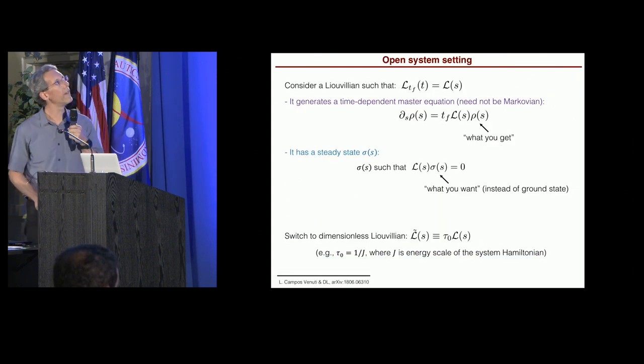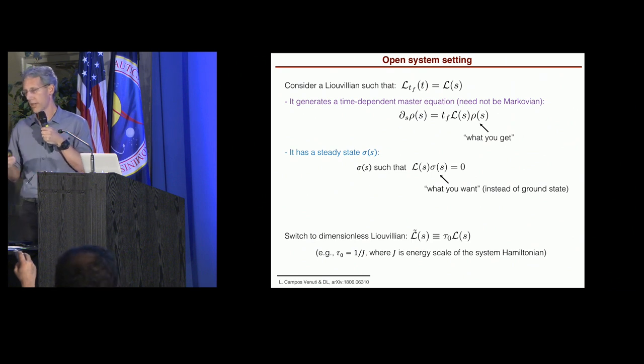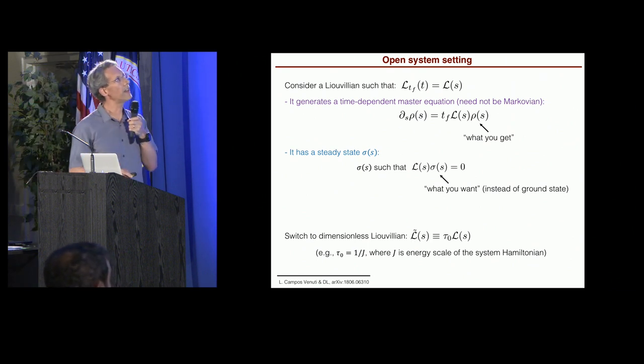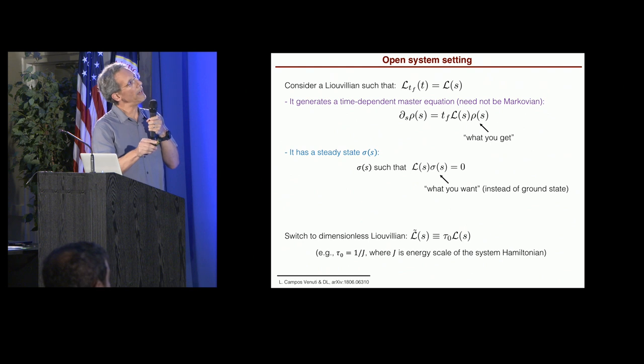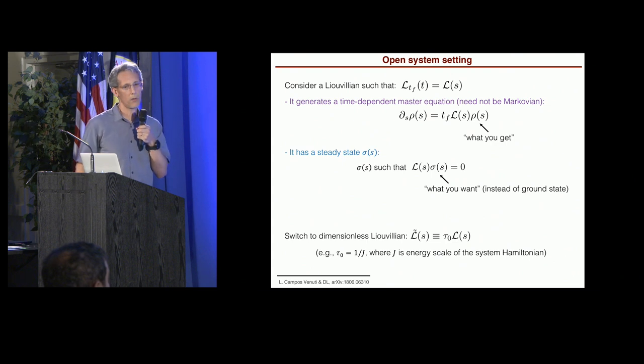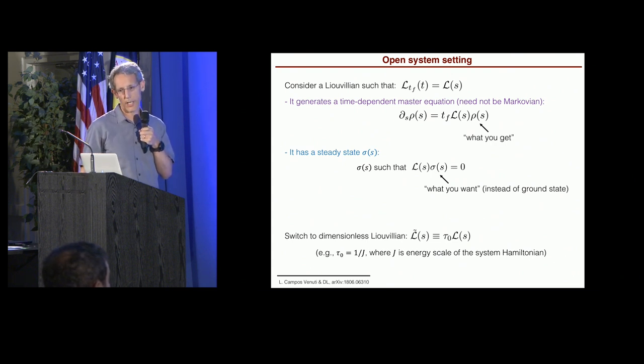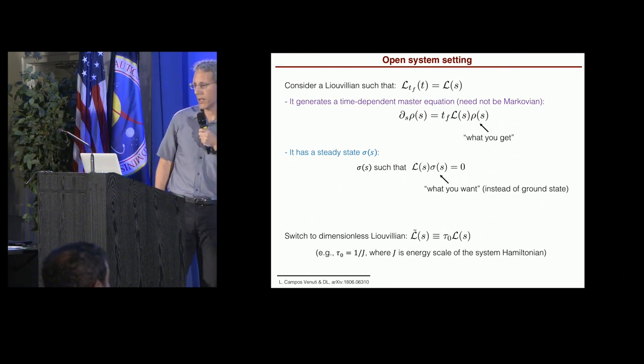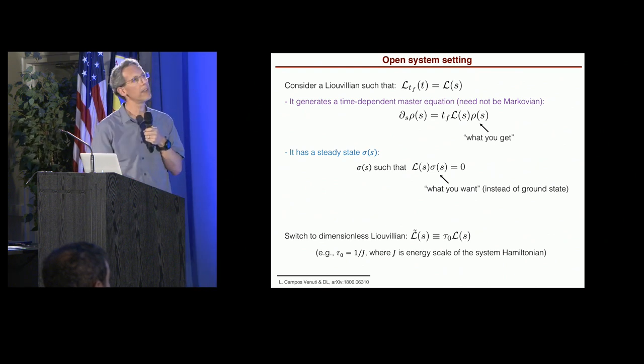That, like our Hamiltonian before, depends only on a dimensionless time parameter, s. So such a Liouvillian will generate a time-dependent master equation. It does not have to be Markovian. All right? So now, instead of the state psi of s, now we have the density matrix rho of s. That's what you get from the actual evolution.